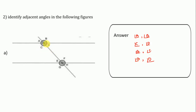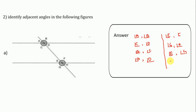This one is completed. Now for the next figure, the adjacent angle pairs are: EF, GH, EG, and FH. These are the adjacent angles of this figure.